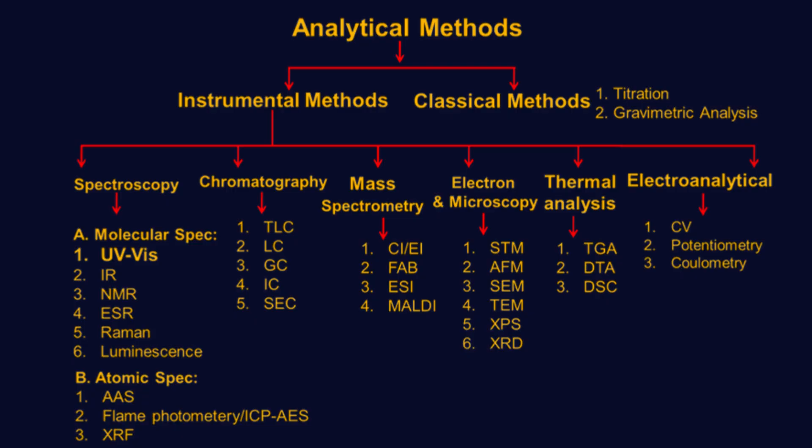Finally, electroanalytical methods like cyclic voltammetry CV, potentiometry, and coulometry analyze chemical reactions using electrical measurements. Together, these methods form the foundation of modern analytical chemistry, enabling precise identification and quantification of chemical substances across research and industry.